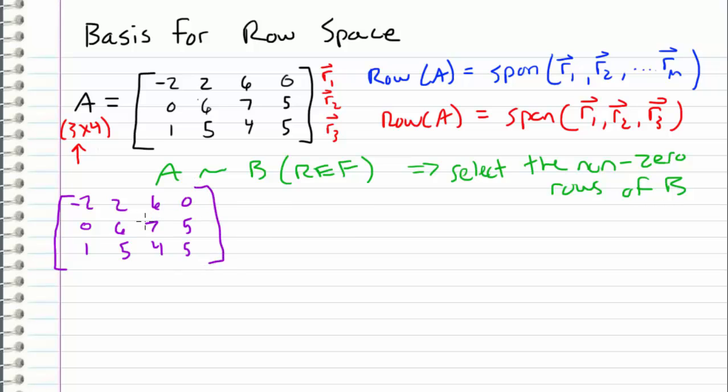And let's go ahead and row reduce this. So I want to use this position as the first pivot, and I want to eliminate this entry to 0. And in order to do that, I can take the third row and add 1 half times the first row. So when I do that, I get a row equivalent matrix that's equal to negative 2, 2, 6, 0, 0, 6, 7, 5, and then 1 plus negative 1 is 0, 5 plus 1 is 6, 4 plus 3 is 7, and 5 plus 0 is 5.